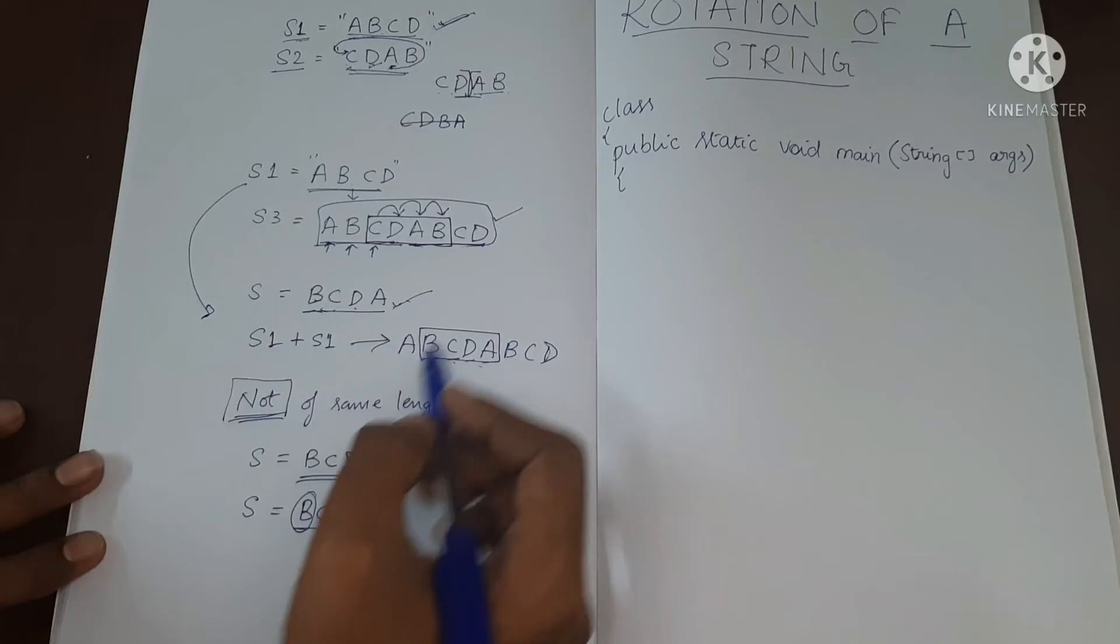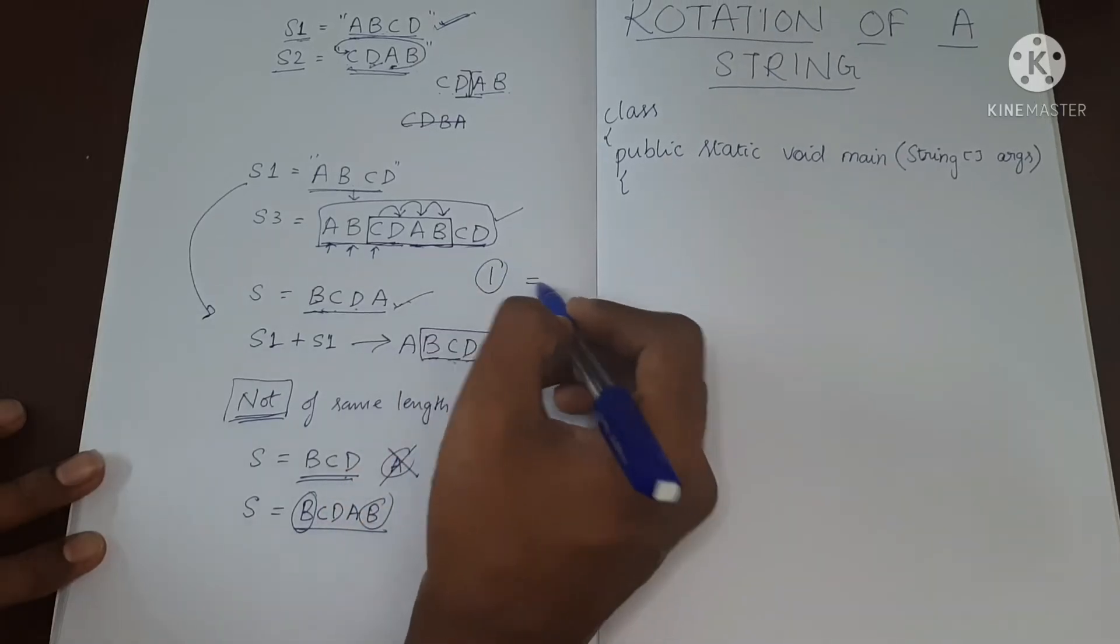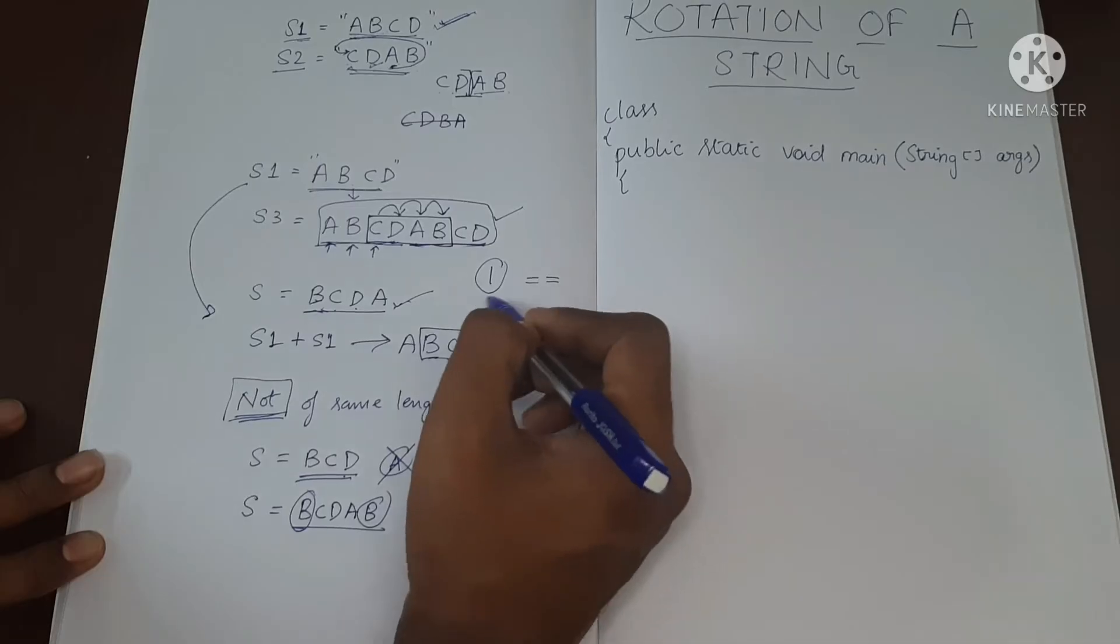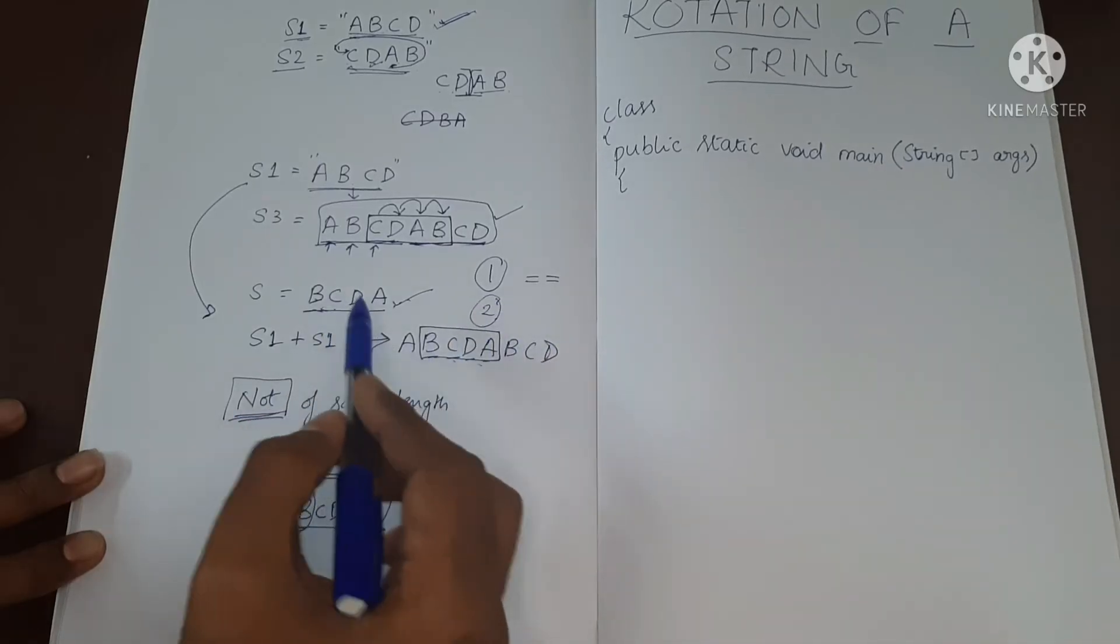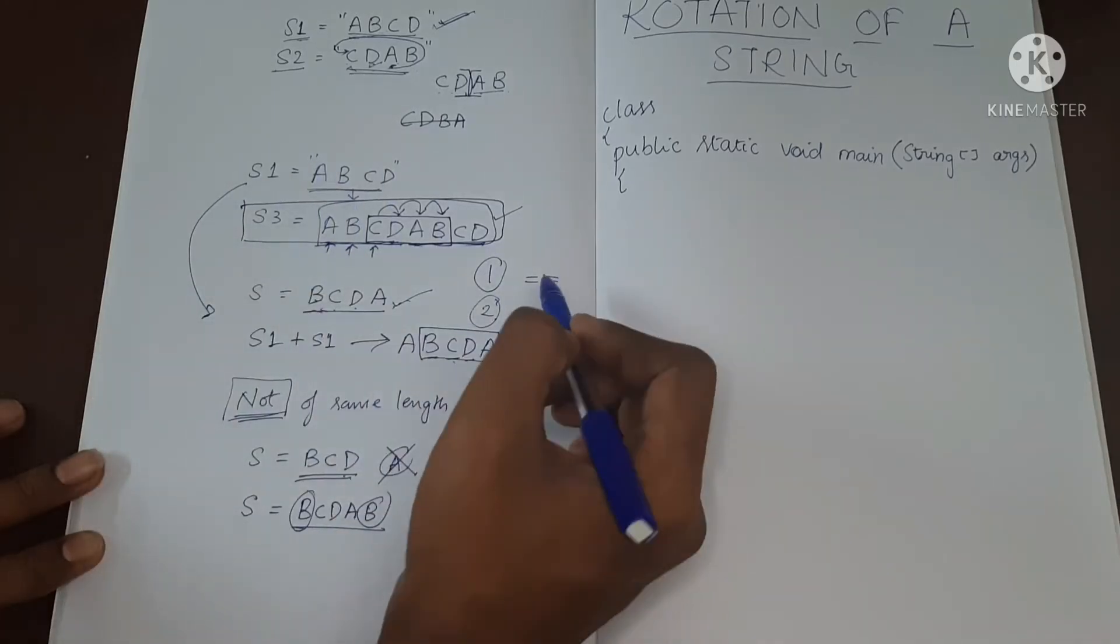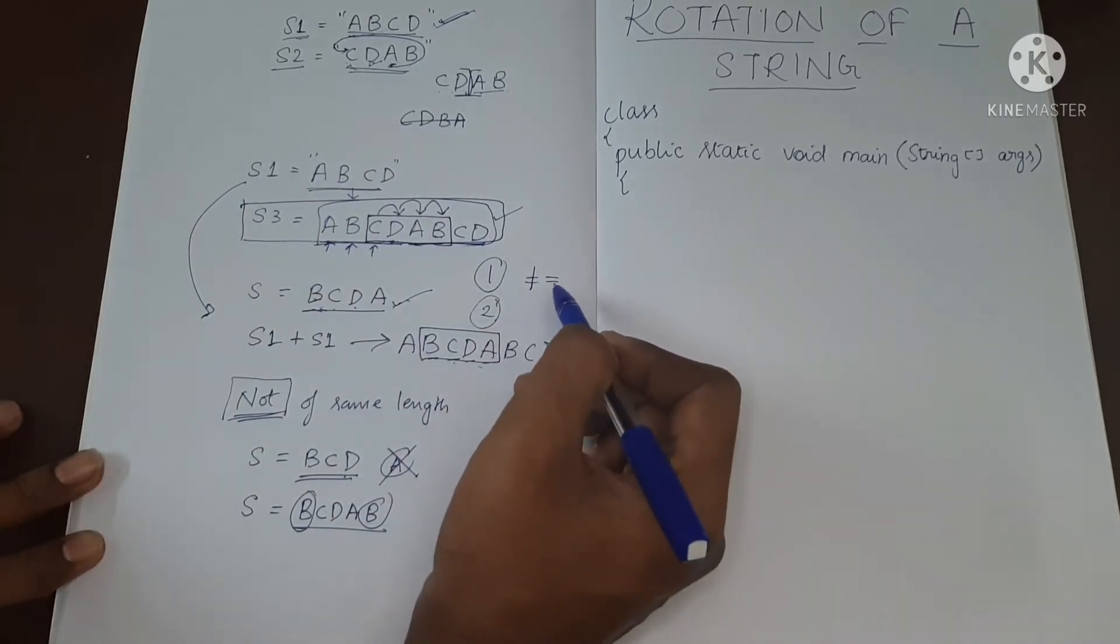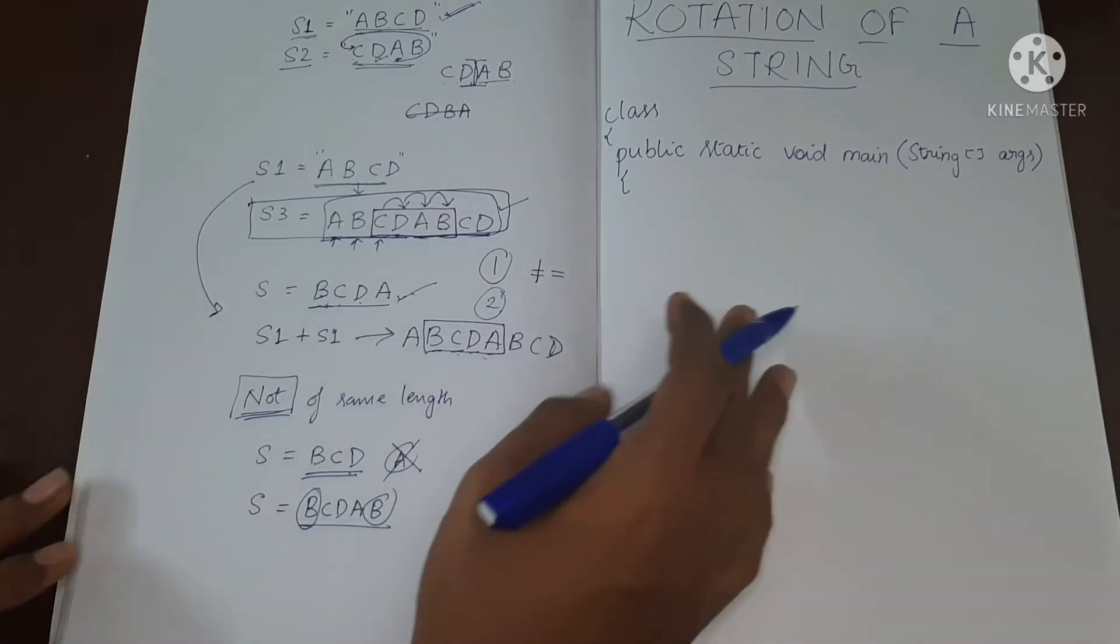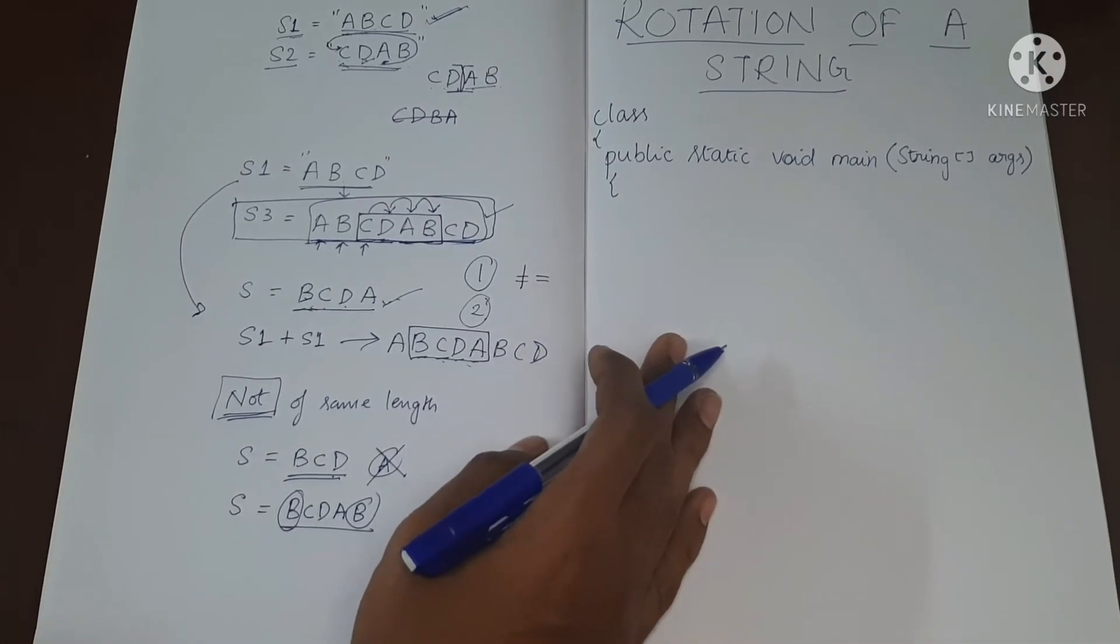So that is what we will do first. First we will check if both their length are equal. If they are equal, we will proceed to case number two. Case number two is nothing but the logic which I have discussed. If it is not equal, then we will just print that it is not a rotation and we will terminate the program. Now let's move to the programming part.